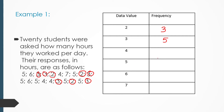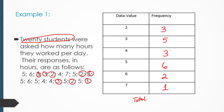Now let's pause the video and fill in the rest of the table. The frequency for five hours is six, the frequency for six hours is two, and finally the frequency for seven hours is just one. We can easily check our work by making sure the total frequency equals 20 students, since we know there were 20 data values. Add 3 plus 5 plus 3 plus 6 plus 2 plus 1, making sure that equals 20.